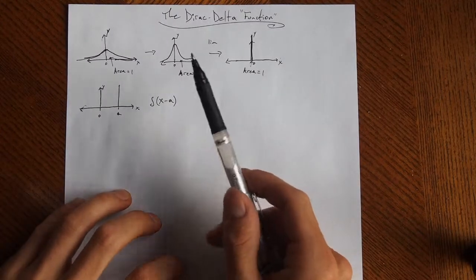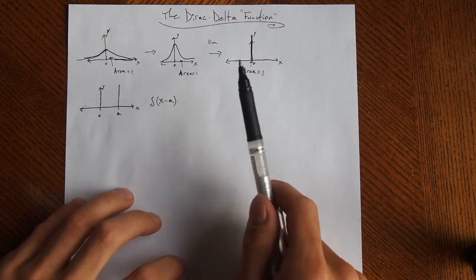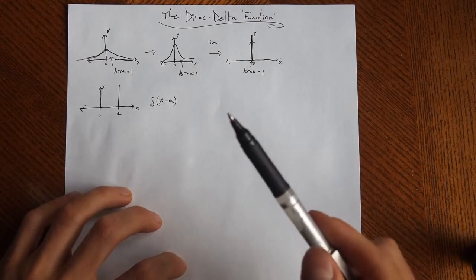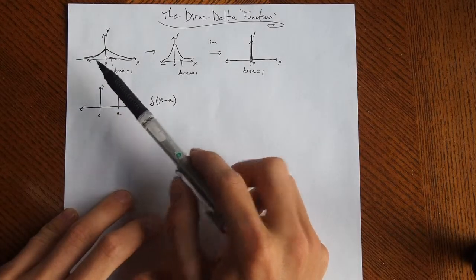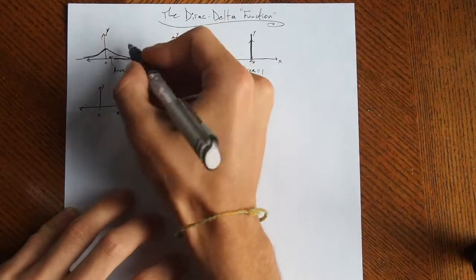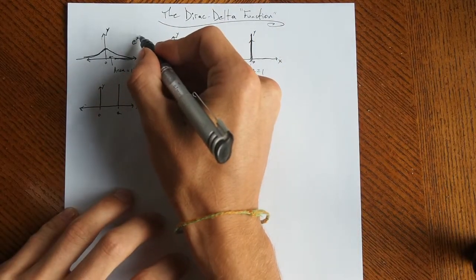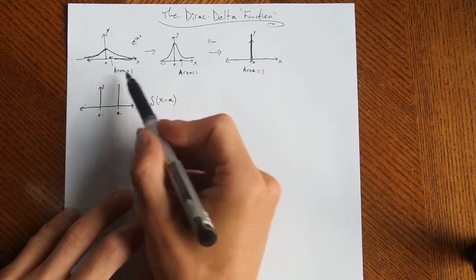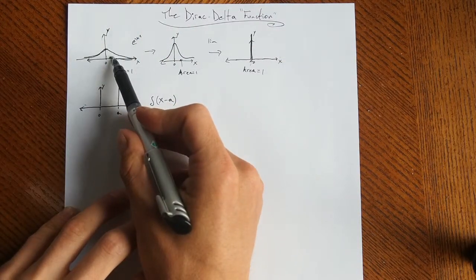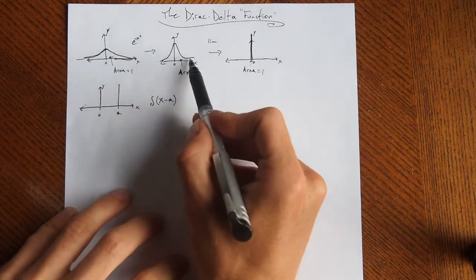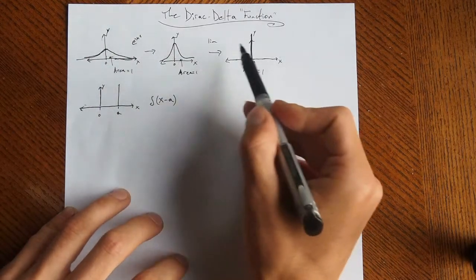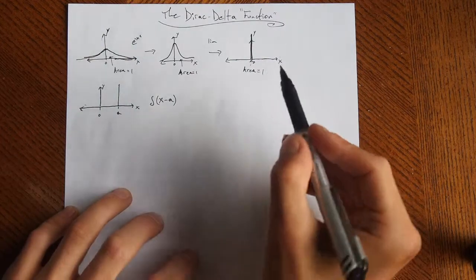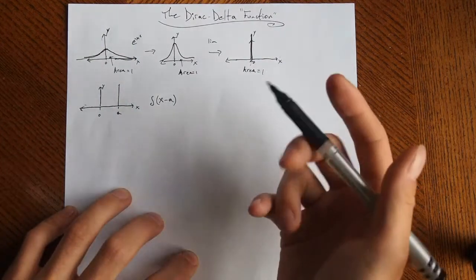Just a quick introduction of one of the ways you can define it. From what I understand, this is the standard way. If you take an exponential like e to the negative x squared, maybe with some constants in there, with area equal to 1, and you keep playing with those constants until it gets skinnier and skinnier, if you take the limit as the skinniness approaches infinity or zero,